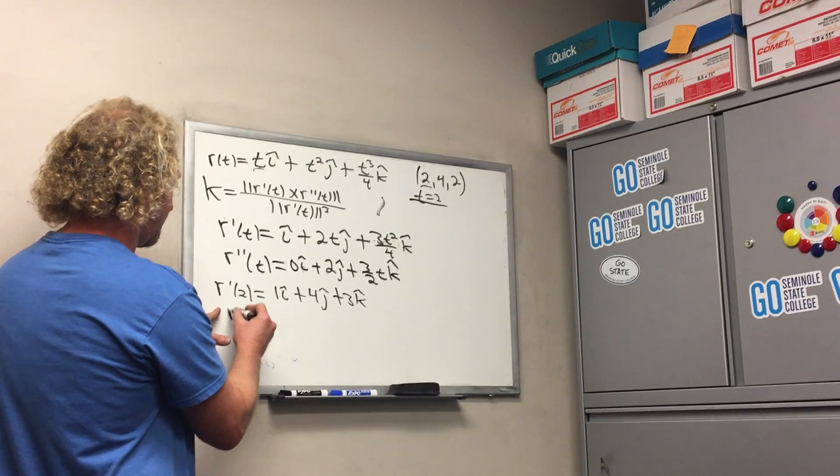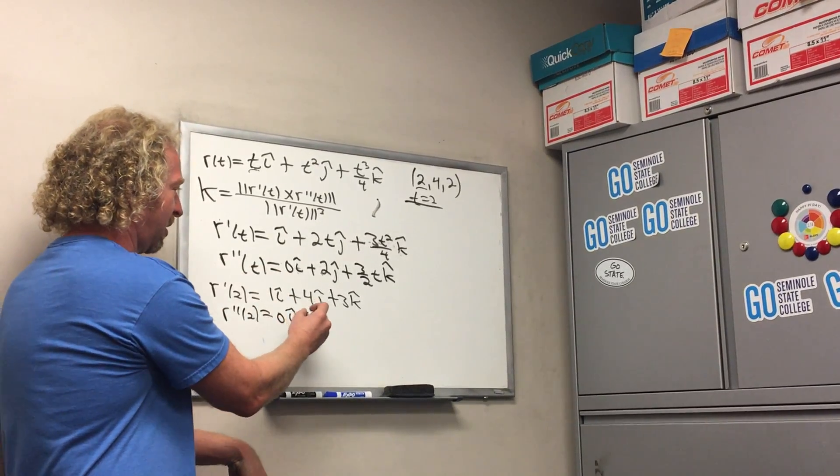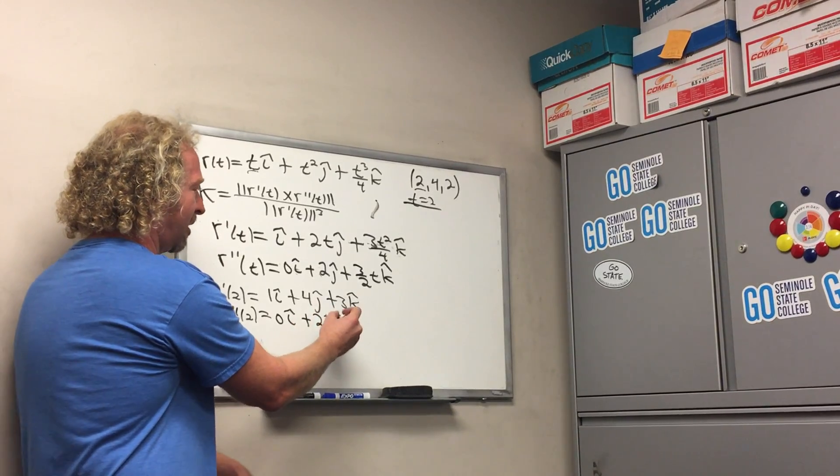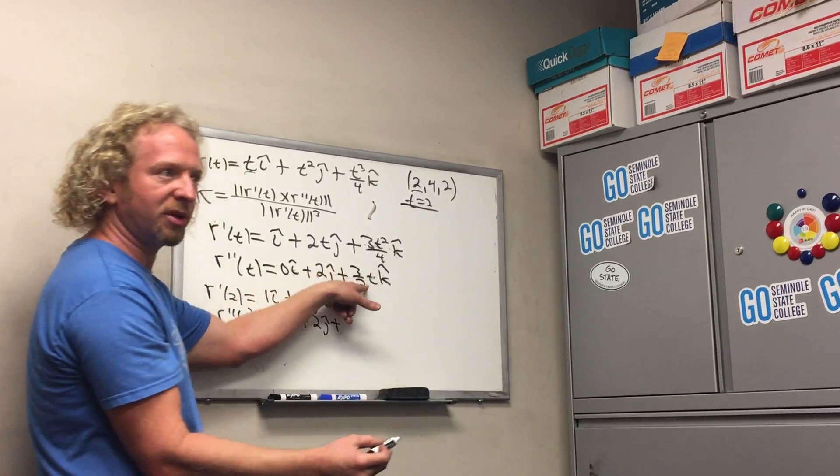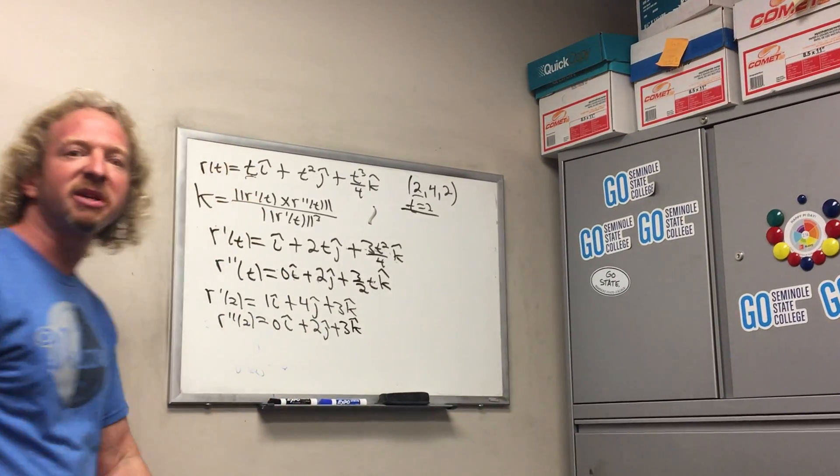And then here, now we're going to plug the 2 in. So it'd be 0 i hat plus 2 j hat, plus - oh same thing! Look, the 2s canceled - so 3 k hat. Any questions up to here? Does it make sense?